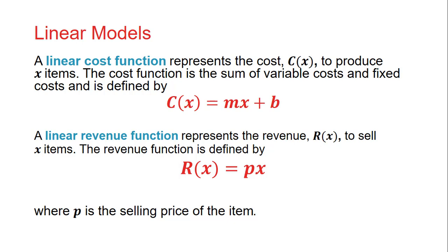Some other linear models we'll work with are linear cost function and linear revenue function. A linear cost function represents the cost C(x) to produce x items. The cost function is the sum of variable cost and fixed cost and is defined by C(x) = mx + b. So b represents our fixed cost, the cost of not producing anything. There are fixed costs like rent that are not dependent on the number of items you produce.